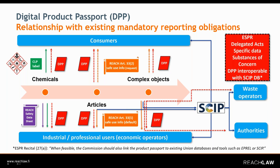In relation to SCIP, ESPR highlights that when feasible, the Commission should link the product passport to existing Union databases, and SCIP is mentioned as an example. So some kind of interaction should be explored if possible, but it is not certain today how that would work.